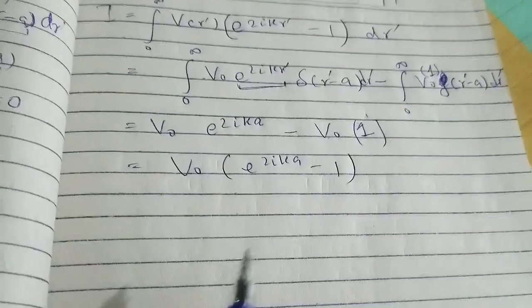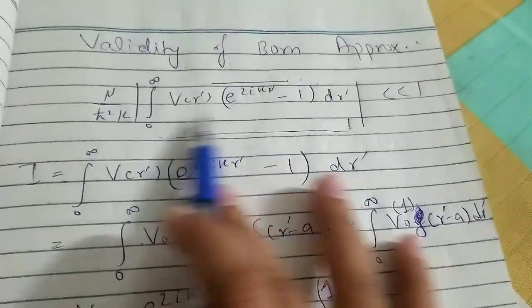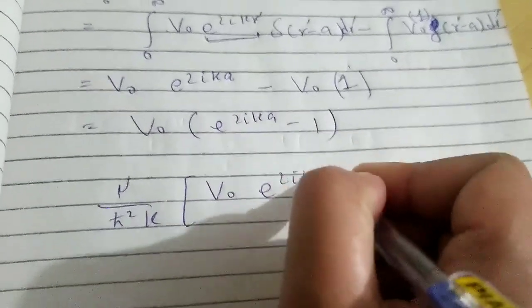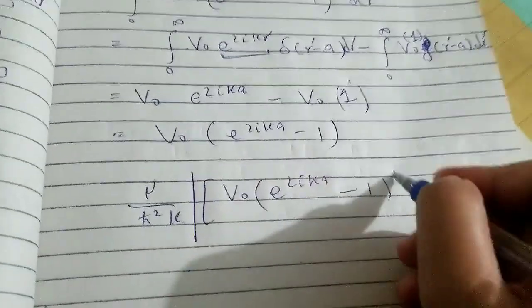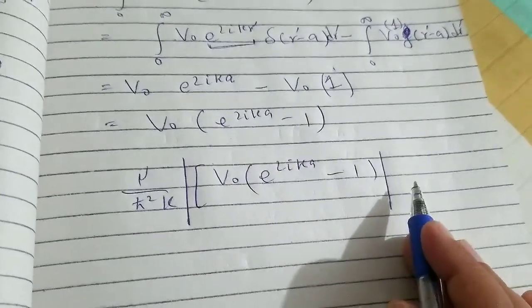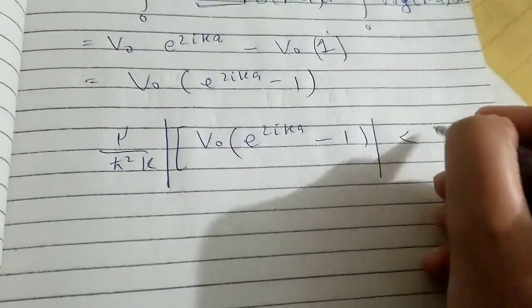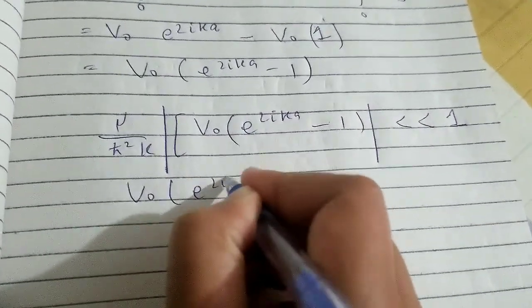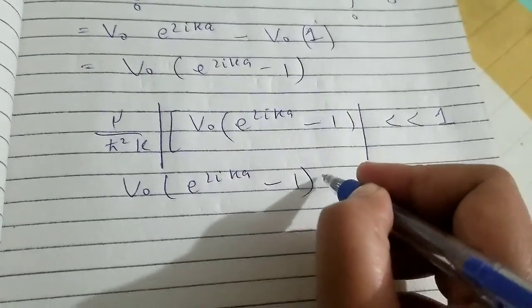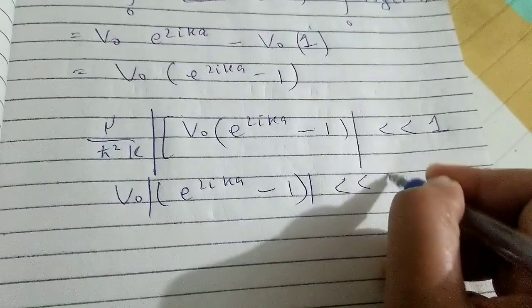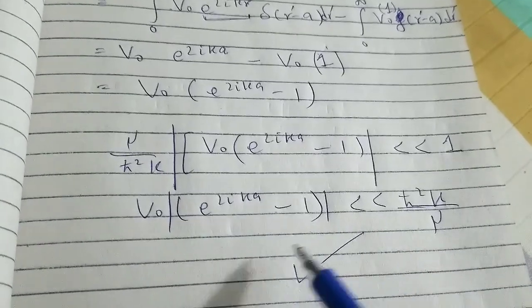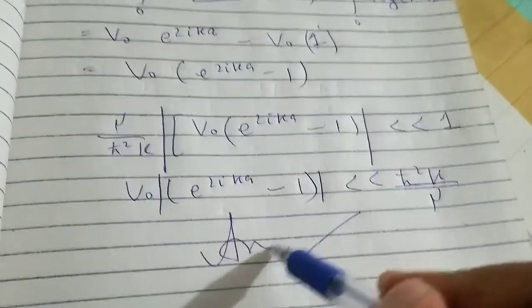Substituting this result, we get V naught times (e to the power 2i·ka minus 1). The validity condition requires the absolute value of this quantity to be much less than one. Rearranging gives the relationship between V naught, a, mu, and k. This is the final answer for the validity condition of the Born approximation for this problem.